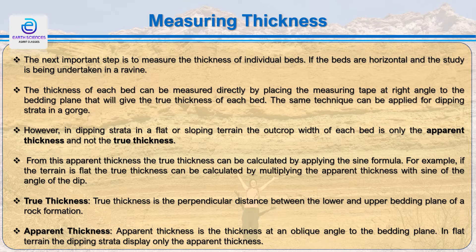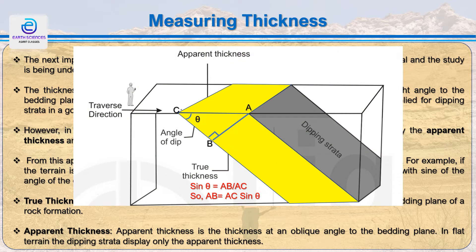The next important step is to measure the thickness of individual beds. If the beds are horizontal and the study is undertaken in a ravine or gorge, the thickness of each bed can be directly measured by placing the measuring tape at right angles to the bedding plane. The same technique can be applied for dipping strata in gorges. However, in dipping strata on a flat or sloping terrain, the outcrop width of each bed is only the apparent thickness, not the true thickness. True thickness — the perpendicular thickness between bedding planes — can be calculated from the apparent thickness using a specific formula.